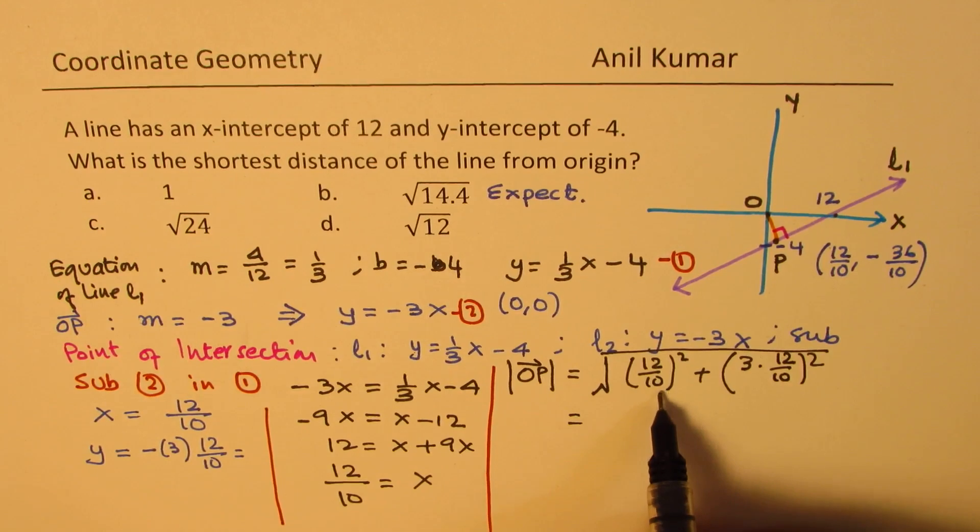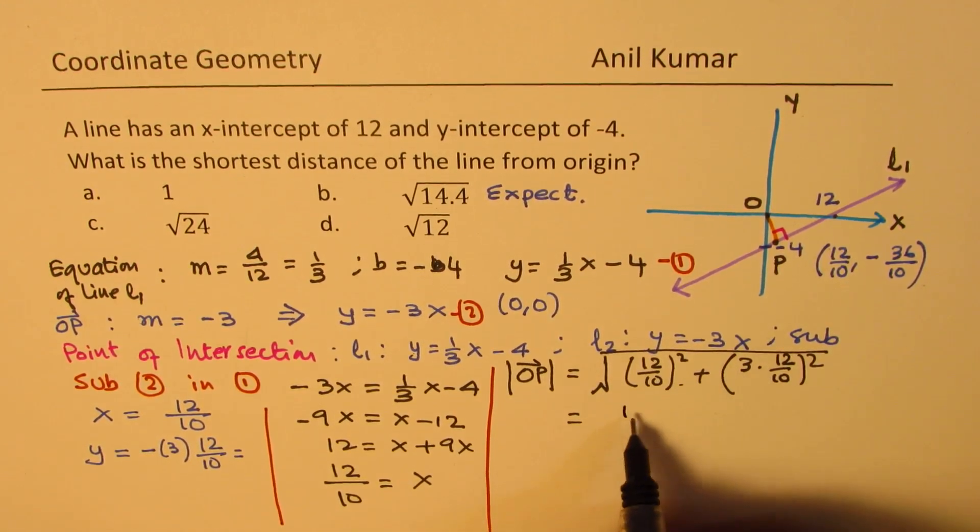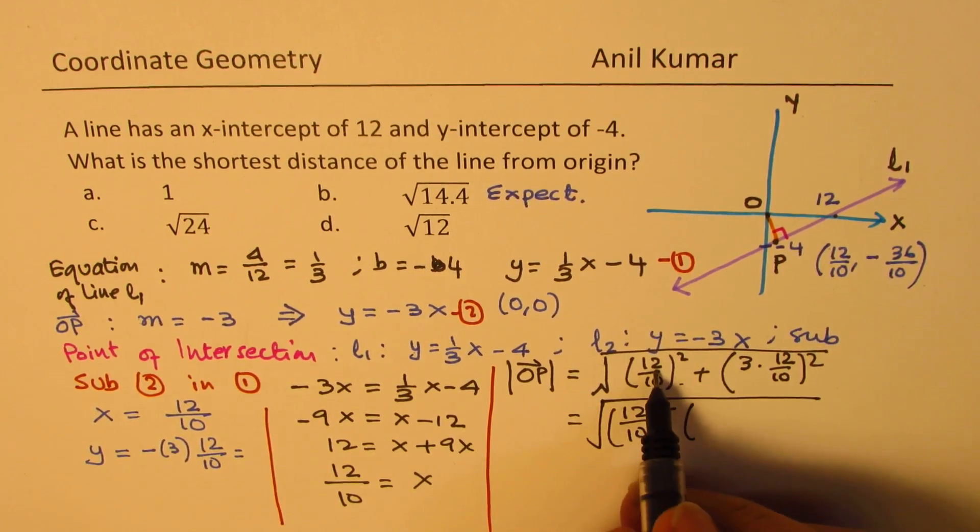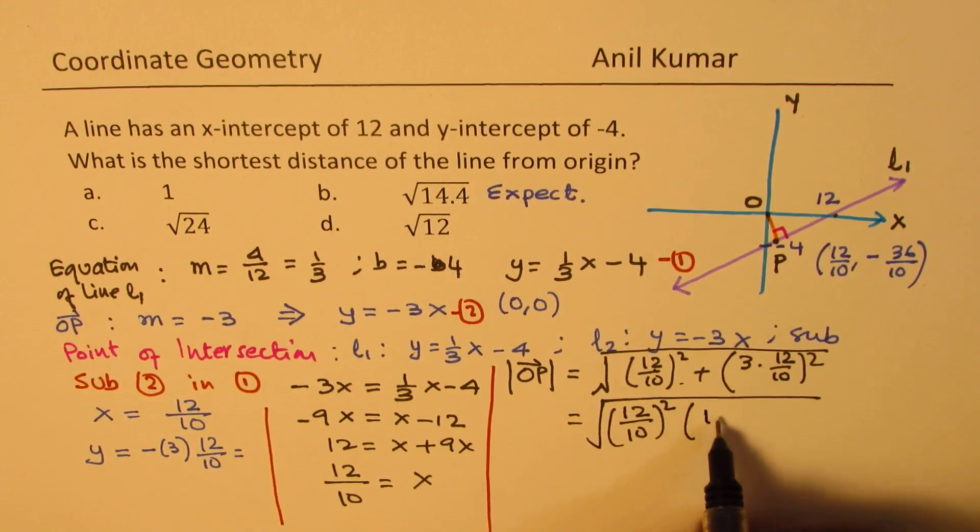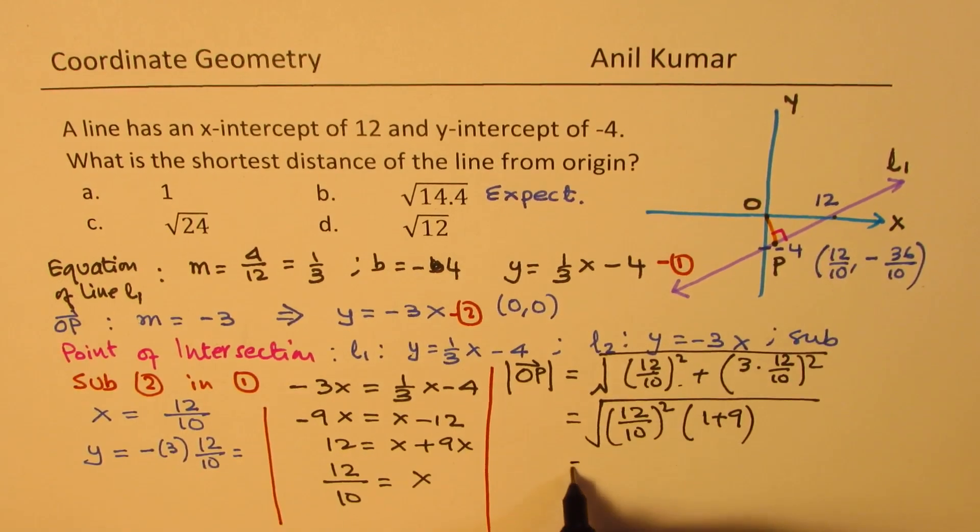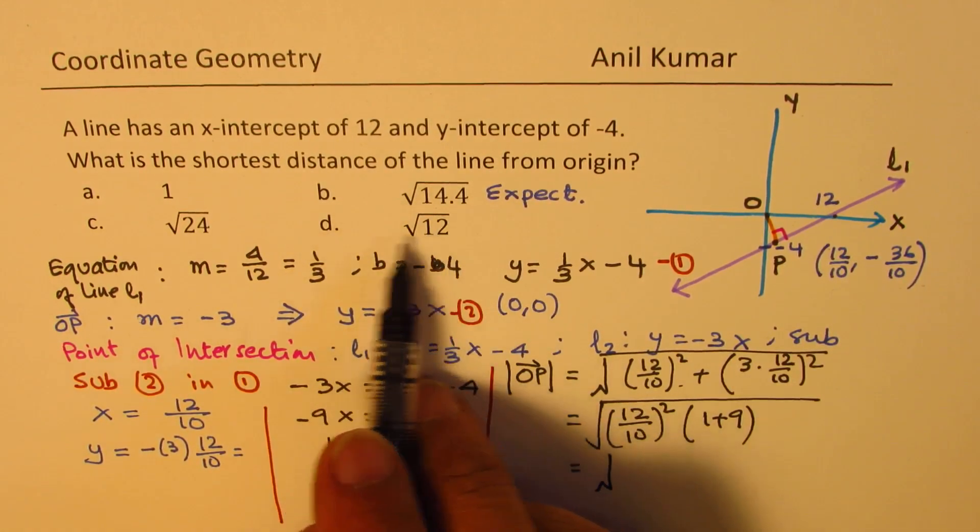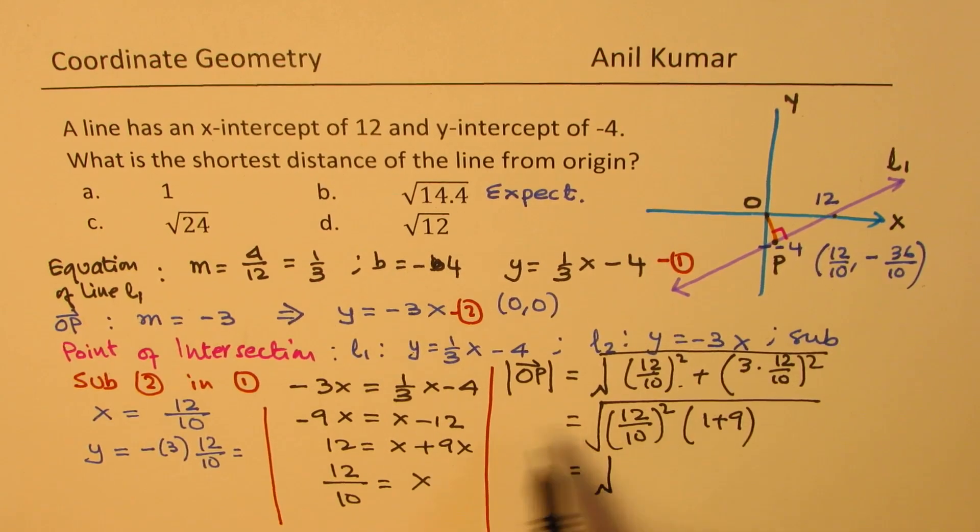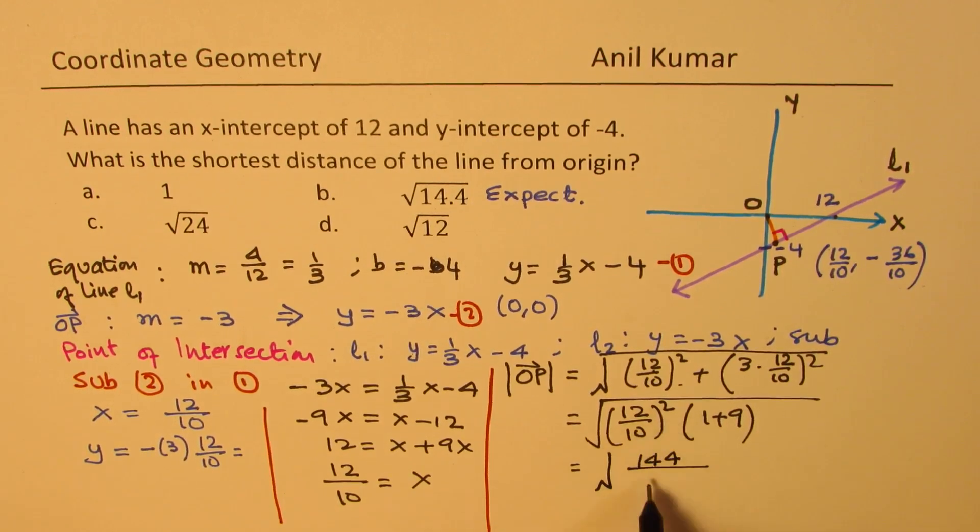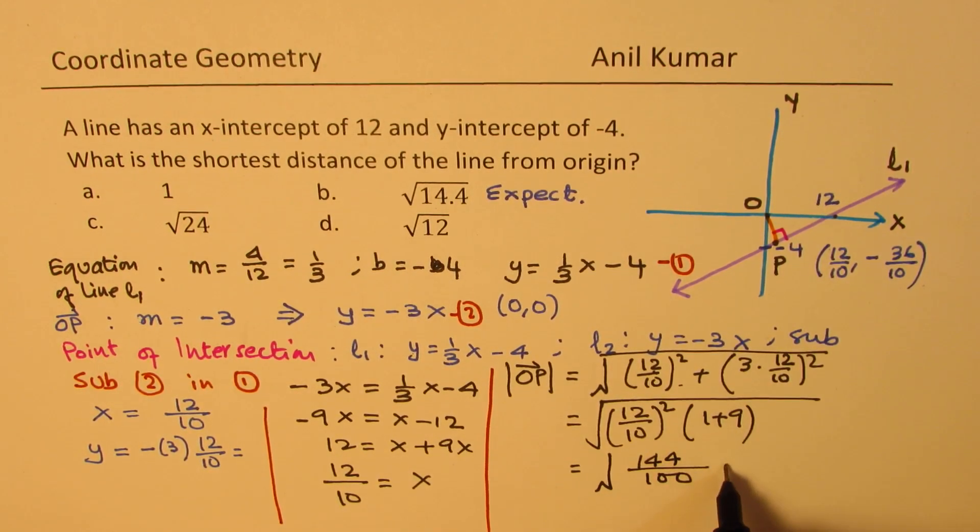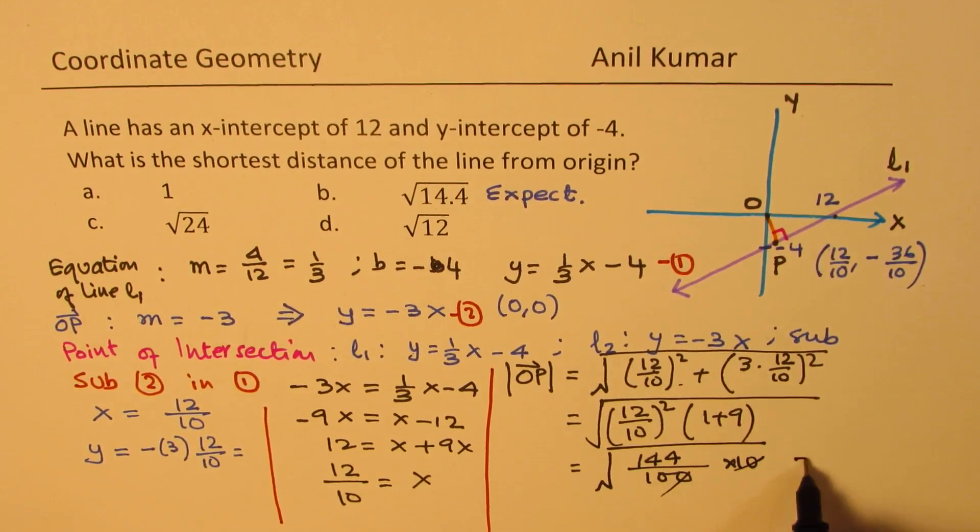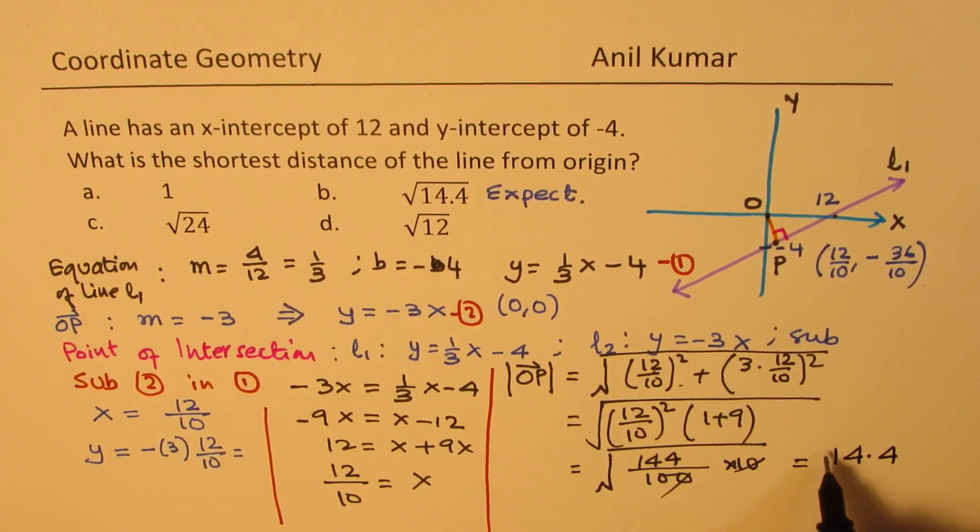So, when you do that, 12 over 10 is a perfect common. So, we can write 12 over 10 square as common. And what we get here is 1 plus 3 square is 9. So, we get 1 plus 9, which is 10. This is 9. So, which is 10. What we get, since we have answers in square roots, I'm not really taking the term outside. So, 12 square is 144. 10 square is 100. And 1 plus 9 is 10. So, we get this. One of the zeros cancel. So, what we really get is 14.4 square root.